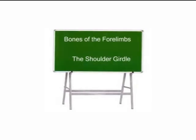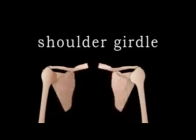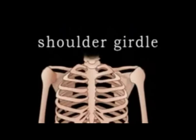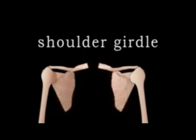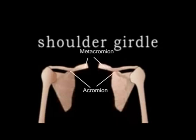Bones of the forelimbs. The pectoral girdle or shoulder girdle is made up of two halves, each consisting of three bones: the scapula, the coracoid process and clavicle. These bones are attached to the upper part of the vertebral column. The two halves are not fused but are attached firmly by muscles. The scapula is a flat triangular-shaped bone which overlies a number of anterior ribs. At its apex is a concave cavity or depression called the glenoid cavity, which articulates with the head of the humerus to form the ball and socket joint. A spine runs along the outer surface of the scapula. Close to the glenoid cavity are two projections, the acromion and the metacromion, which are both for muscle attachment. The clavicle articulates on one end with the acromion process and on the other with the sternum.